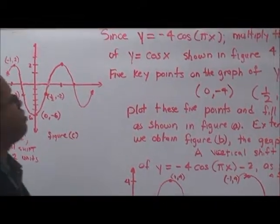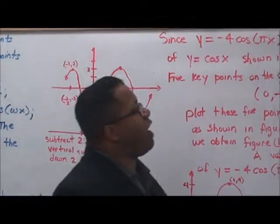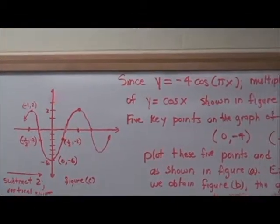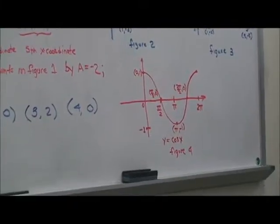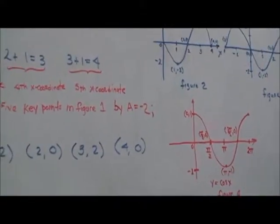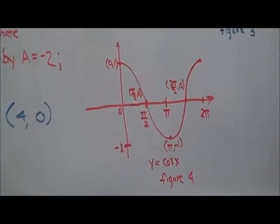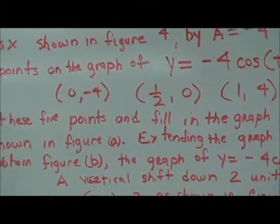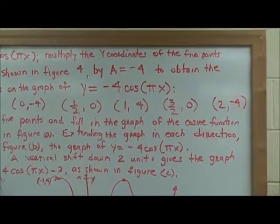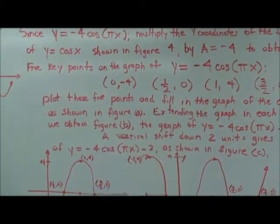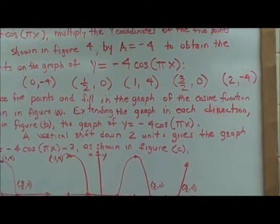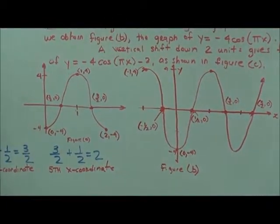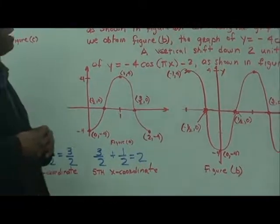Since y equals negative 4 cosine of pi times x, we multiply the y-coordinates of the five key points of the standard cosine function by the amplitude of negative 4. The five key points become: (0, negative 4), (1/2, 0), (1, 4), (3/2, 0), and (2, negative 4). We plot these points and fill in the graph as shown in figure A, then extend the graph in each direction as shown in figure B.